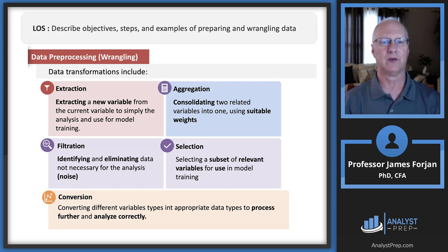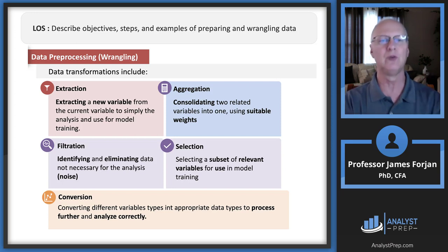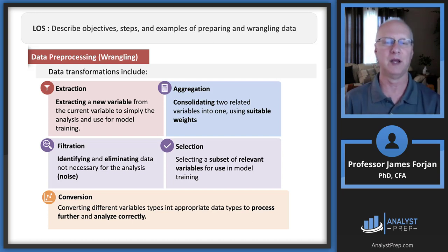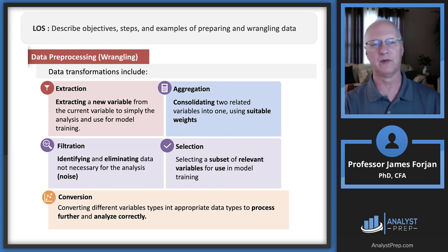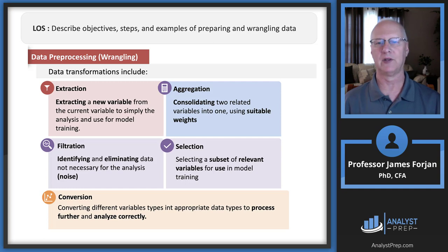Data transformation: extracting a new variable. One of the first things I learned in econometrics was that if you have two variables that are correlated, just use them as one variable as a ratio — put one in the numerator, one in the denominator. So extracting a new variable from current variables — think ratios. Also: filtration, identifying and eliminating data, aggregation, selection, and conversion.